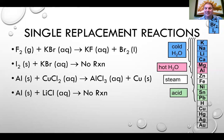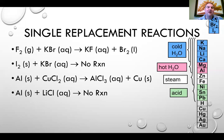Fluorine is more active — it is higher on the activity series than chlorine, bromine, or iodine. So the first reaction on the slide, fluorine gas plus potassium bromide makes potassium fluoride and bromine liquid. That reaction can happen because fluorine is higher than bromine and can replace it. However, iodine solid and potassium bromide does not react because iodine is below bromine on the activity series — it is less active.